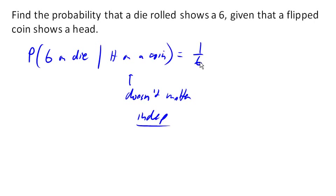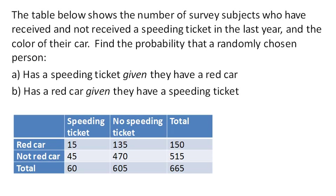Let's look at one more case now. Let's look at a table of values here. These are the speeding ticket folks. So let's find the probability that they have a ticket given that they have a red car.